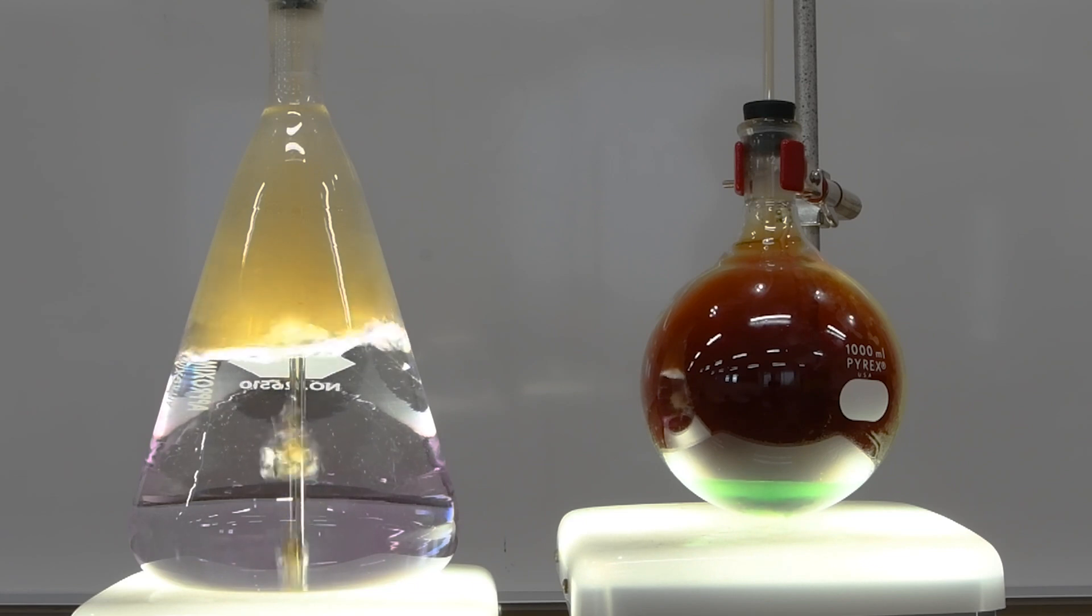It becomes clear. So the nitrogen dioxide forming in the round flask is bubbling over, dissolving in the water in the larger flask, and it's reforming a nitric acid solution.